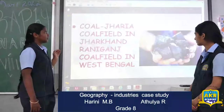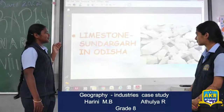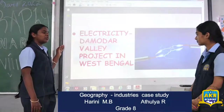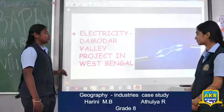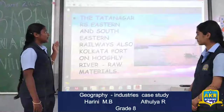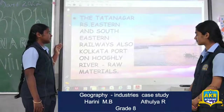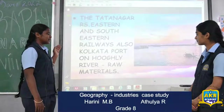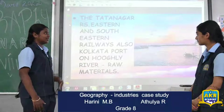This is the coal. And we get limestone from Sundargarh in Odisha. This is the limestone. And we get abundant and cheap electricity from Damodar Valley, which is located in West Bengal. The Tata Nagar Railway Station on the Eastern and South Eastern Railways and also the Kolkata port on the Hooghly River — these make it easy to transport the raw materials. This is the Hooghly River.